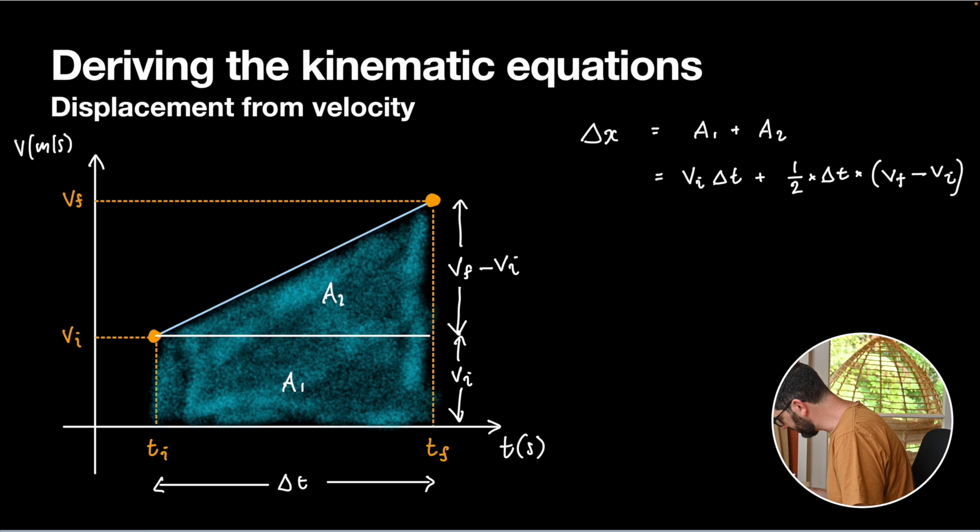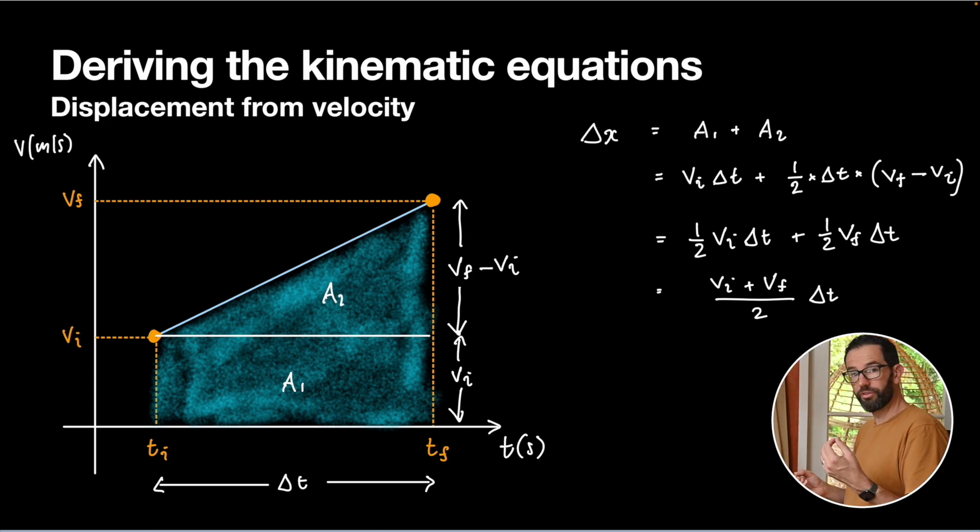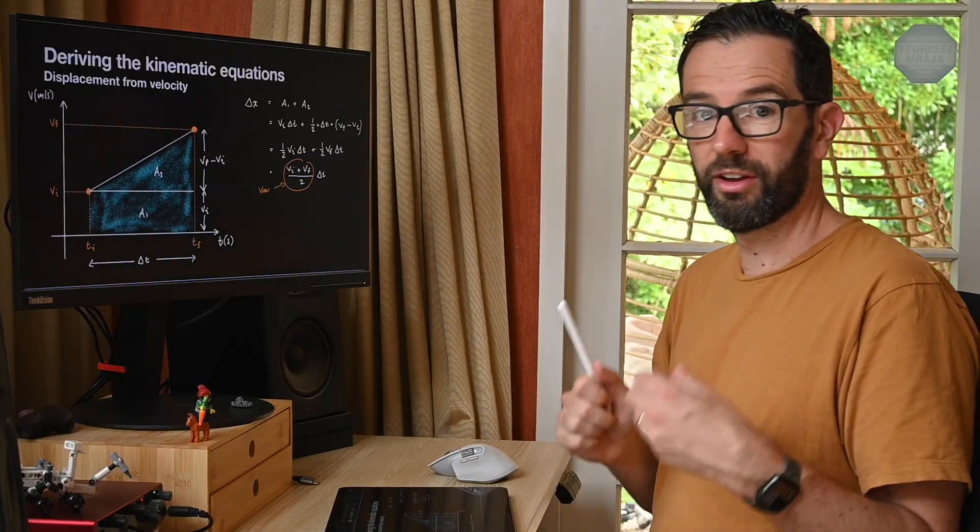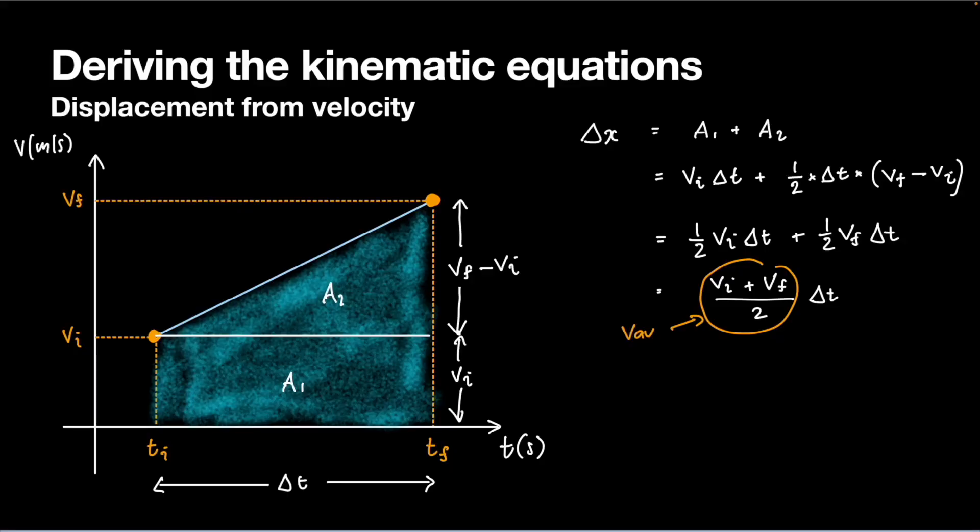So we've got that. And if I just rearrange this slightly, I'm just going to collect the vi's and the vf's together. We're going to have half Δt vf, and then we're going to have minus half Δt vi from this piece here. So what we have overall, that will equal one half vi Δt, because I have to take half of those off the starting one, plus one half vf Δt, which is (vi + vf) / 2 times Δt. And this is an interesting one, because this number here is my average velocity. When we have constant acceleration, it turns out the average velocity is just starting velocity plus final velocity divided by two. So that is another one of my kinematic equations.